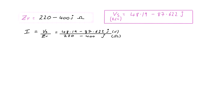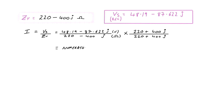To do this division we cannot divide by a complex number — only by a real number — so we multiply top and bottom by the conjugate of the denominator. This gives us a real denominator overall. We use expanding brackets — binomial expansion — doing first, outer, inner, and last for both the numerator and the denominator.